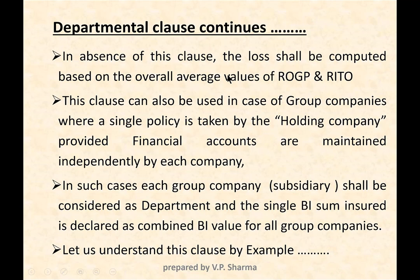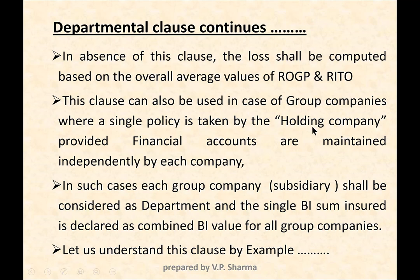In the absence of this clause, loss shall be computed based on the overall average rate of gross profit and reduction in turnover. This clause can also be used for group companies where a single policy is taken by a holding company, provided financial accounts are maintained independently by each company — as is done in most cases like Siemens, ABB, etc.